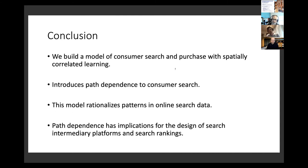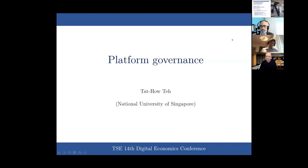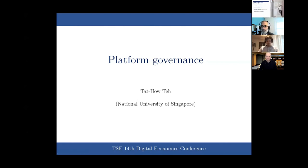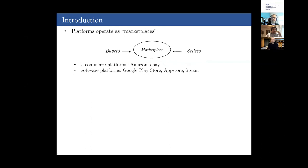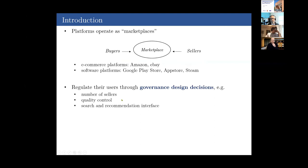In conclusion, we're building a model of search and purchase with spatially correlated learning, drawing out implications for the design of intermediate platforms and search rankings. Next up is Tad Ho Tay from the National University of Singapore about platform governance. Thanks for having me. Many prominent online platforms operate as marketplaces enabling transactions between buyers and sellers, and such platforms actively regulate user behavior by setting rules or governance design decisions.